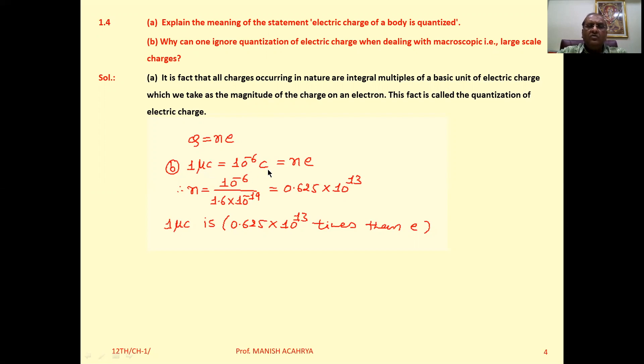If we take 1 microcoulomb charge, that equals n × e, so n equals 10^-6 divided by 1.6 × 10^-19. When you solve this, your answer will be 0.625 × 10^13.